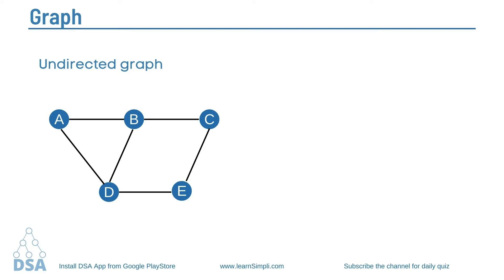A graph can be directed or undirected. In an undirected graph, edges are not associated with directions. In a directed graph, edges form an ordered pair and represent a specific path from some vertex A to another vertex B. Node A is called the initial node while node B is called the terminal node.